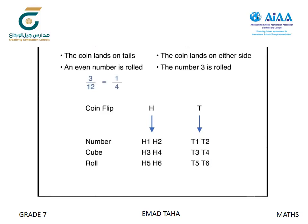For Option 2, two of the twelve outcomes include a roll of three, so the probability of success is 2/12, or one-sixth. Listen and look for students who draw the conclusion that Option 1 represents Talia's better chance for winning the game.